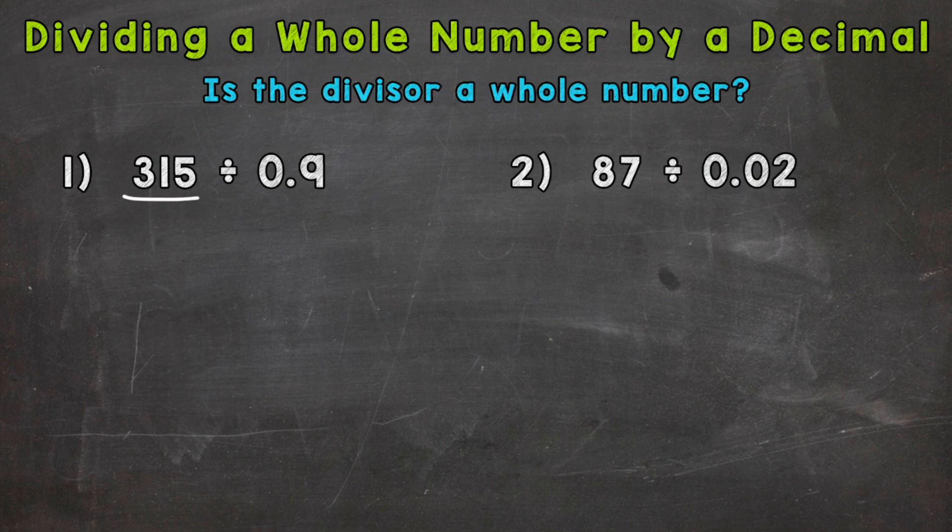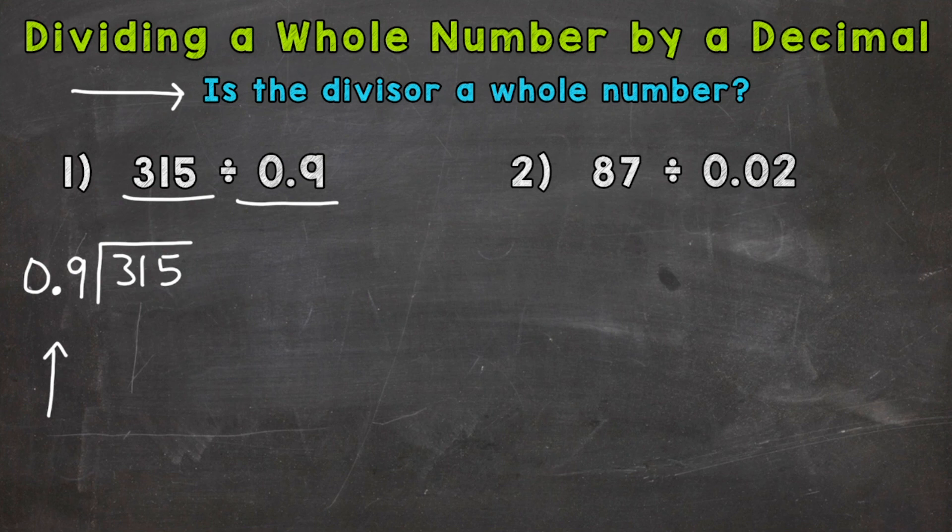So let's set this up. 315 is our dividend. It's the number that's being split or divided up, and it goes underneath the division bar. And we're dividing by 9 tenths. So that goes on the outside. That's our divisor. So when it comes to division problems that involve decimals, we have that problem set up, but we need to ask ourselves a very important question before we can go through the division process. And it's at the top of your screen. Is the divisor a whole number? And in this case, the divisor, the outside number, 9 tenths, is not a whole number. So we cannot start and go through the division process yet. We need to make that a whole number.